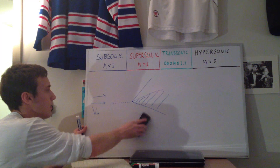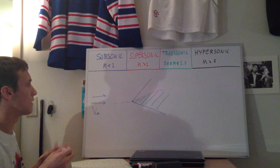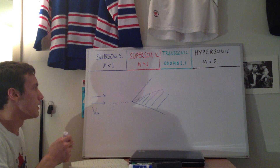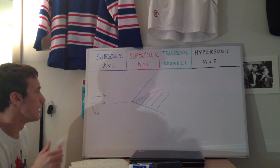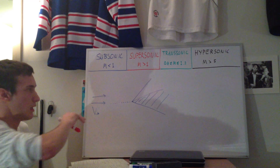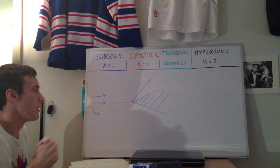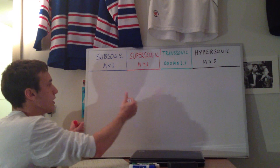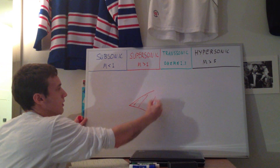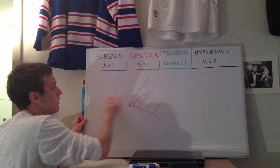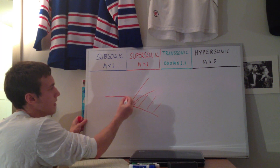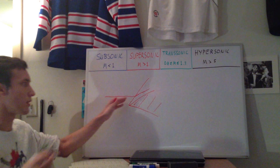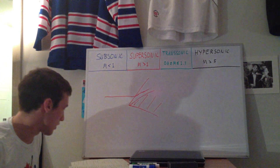What happens in the subsonic regime is that the streamlines are continuously changing and varying. But for supersonic flow, when streamlines pass through the shockwave, they immediately change direction — it's a discontinuous jump across the shockwave.